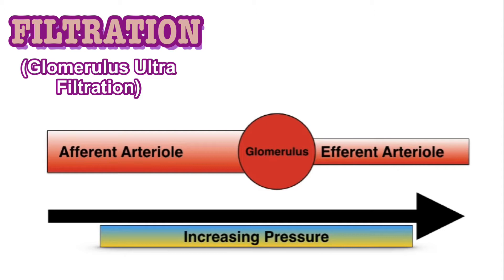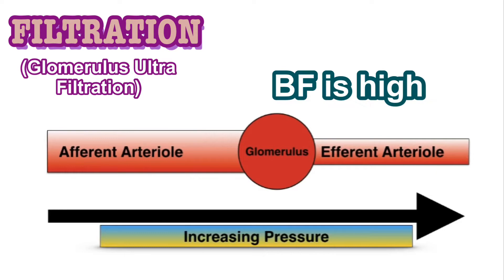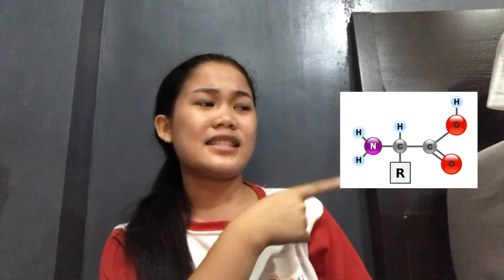The first stage is filtration, or glomerulus ultrafiltration. The reason it is referred to as ultrafiltration is because the blood vessels are continually narrowing into these arterioles, and even narrowing into thinner glomerulus, which is very porous. So blood pressure is being further increased, blood flow is high, and this facilitates ultrafiltration. What is being filtered from the blood plasma during filtration? We have water, salt, glucose, amino acids, urea, and vitamins.